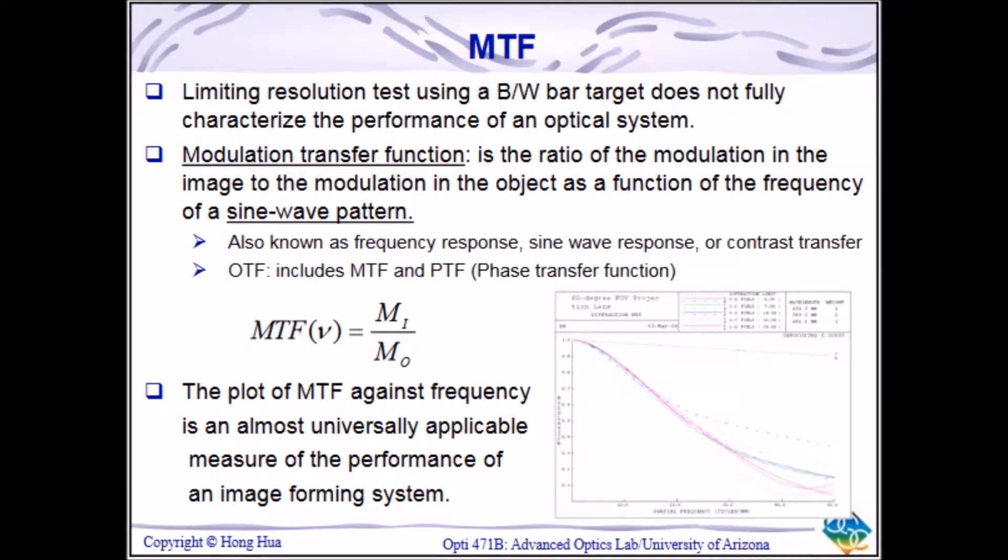The modulation transfer function is pretty well the universal metric for image quality. It essentially creates a function of contrast as it relates to the spatial frequency of the object being imaged. However, no matter how advanced an optical system gets, image quality is limited by physics, in this specific case diffraction.